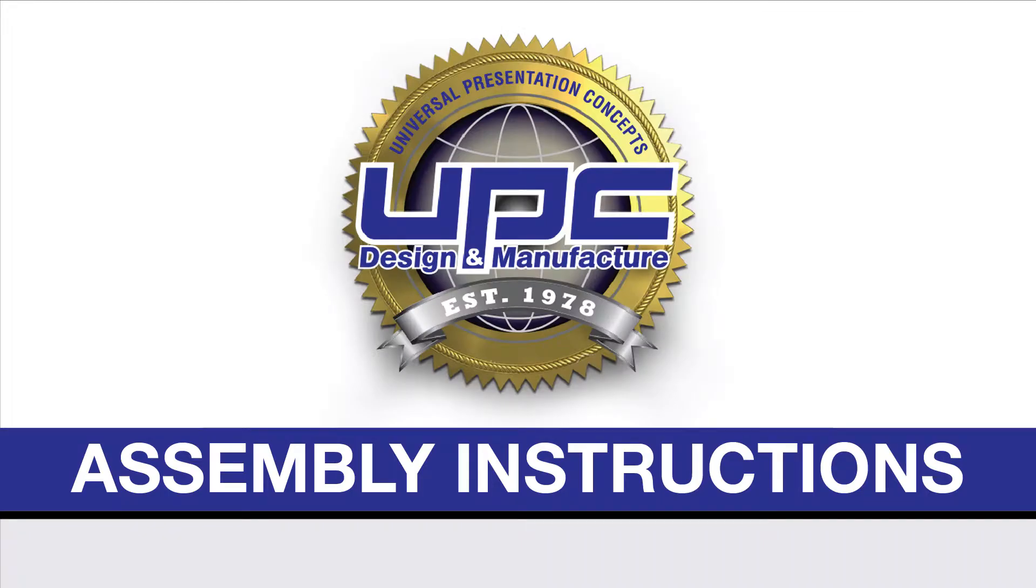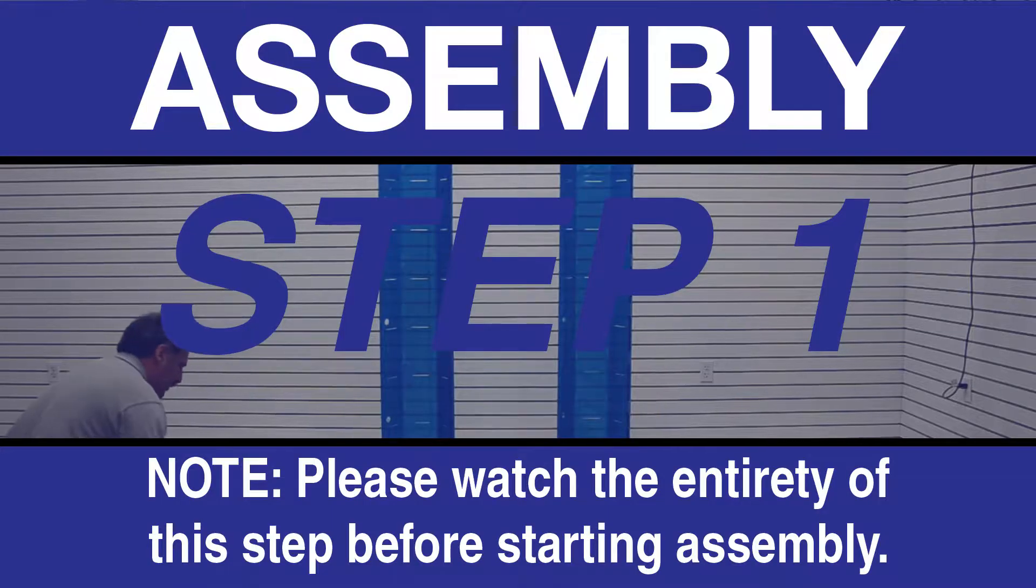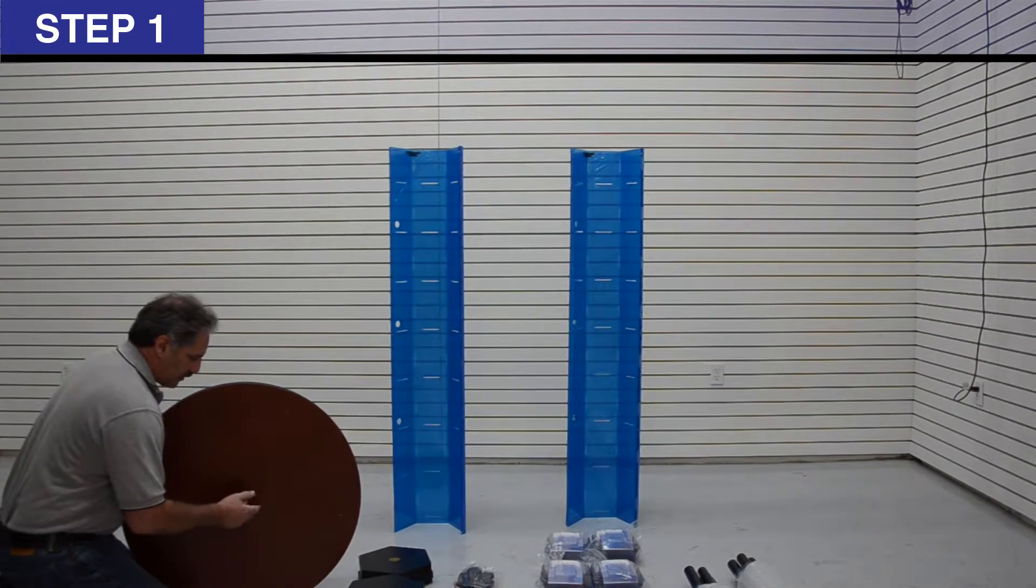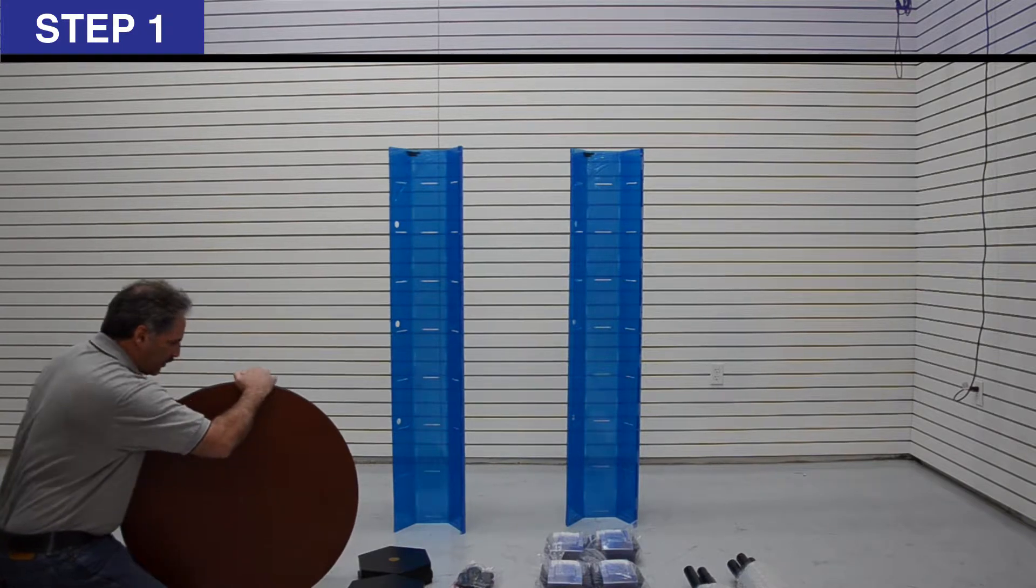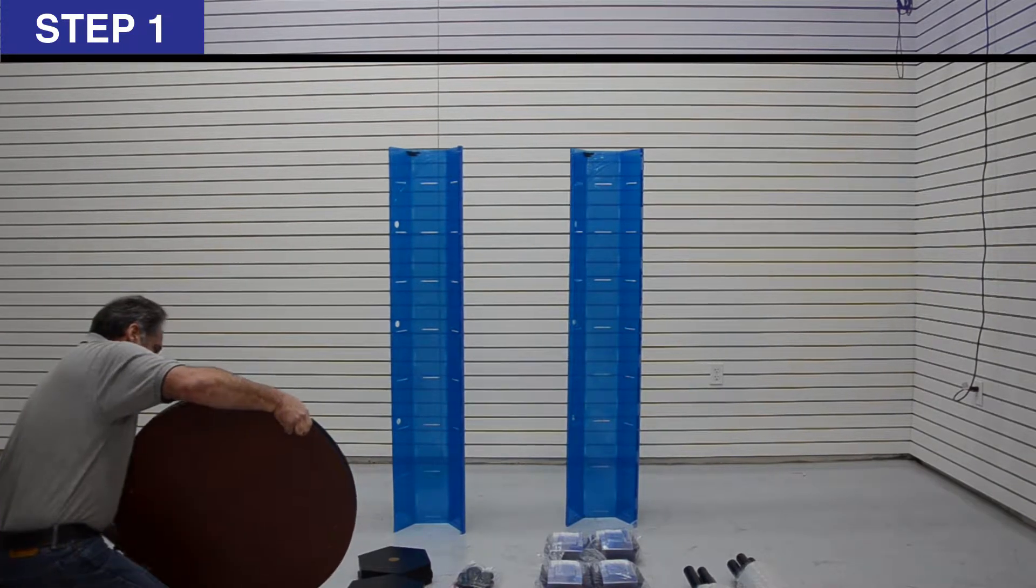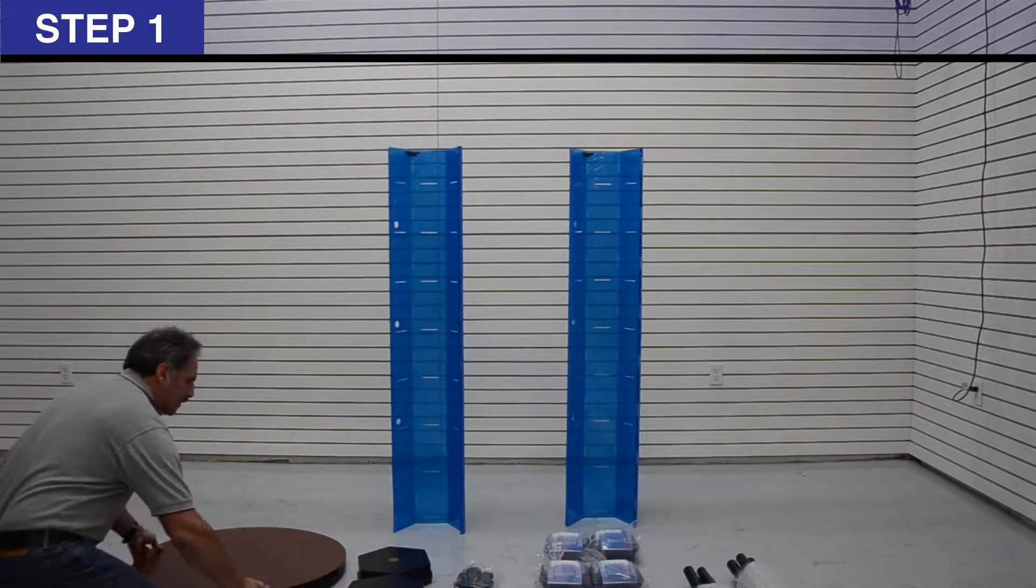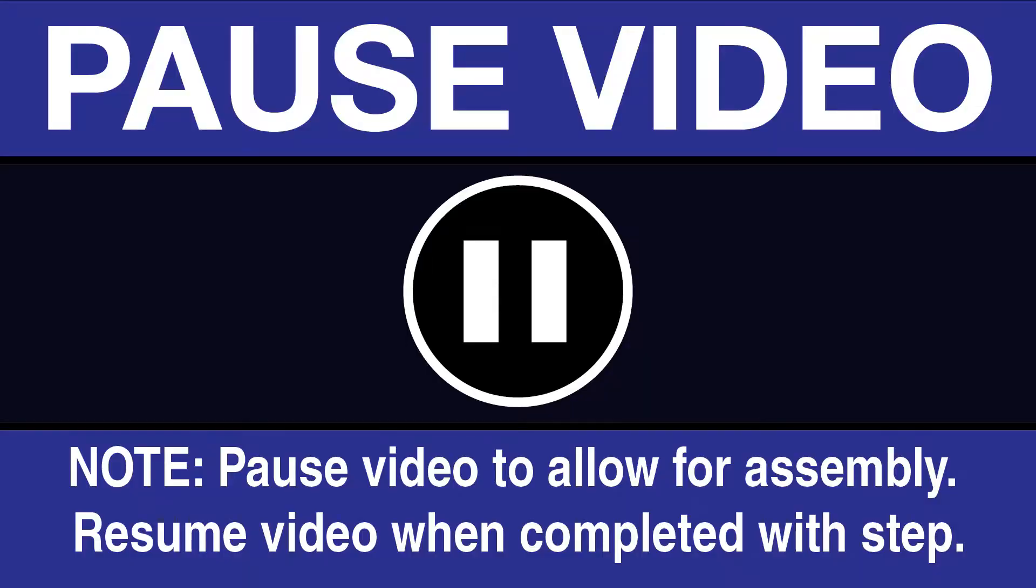Assembly. Step 1: Remove 1 bolt, 1 wing nut and 1 washer from base Q. Discard before beginning assembly. This must be completed or spinner will not spin. Pause video to allow for assembly. Resume when completed with step.